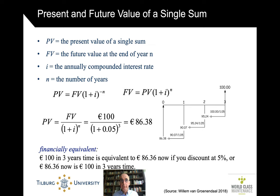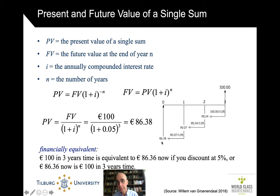The present value and the future value of a single sum — there is some compounding happening. Suppose there are 100 euros in the future. What does that mean for its value today? That depends on how far in the future — that's n, the number of periods — and on the interest rate, the annual compounded interest rate. The present value today of that 100 euros in the future is the 100 euros divided by the interest rate compounded over the number of years. So: 100 euros in three years time is worth 86.38 euros today, or 86.38 euros today is worth 100 euros in three years time.